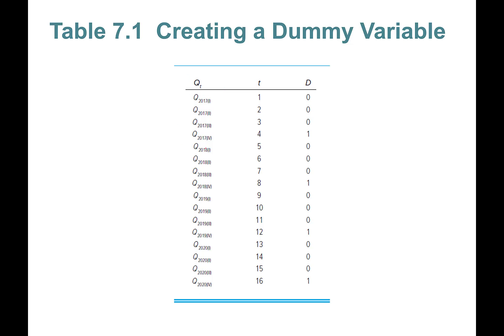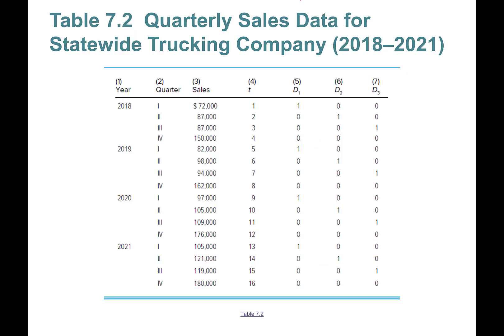Here's how the data is coded. You have sales from 2017 Q1 through Q4, and a time trend variable running from 1 through 16 across years 2017, 2018, 2019, and 2020. You create a dummy variable that takes a value of zero for all periods except the fourth quarter of each year.